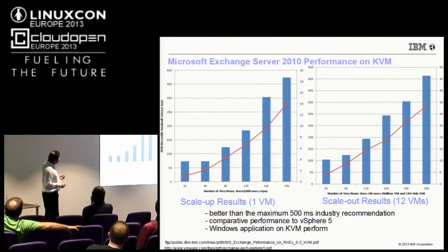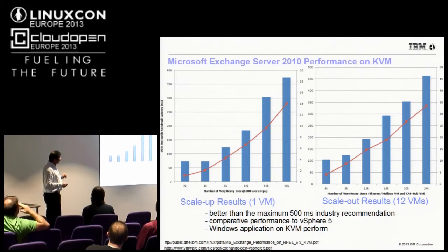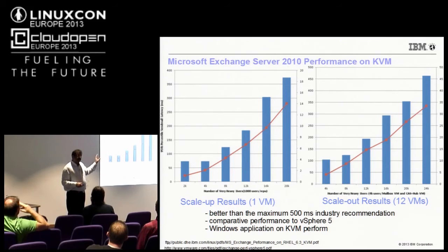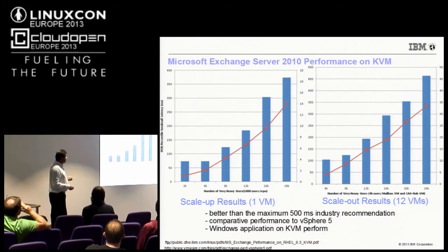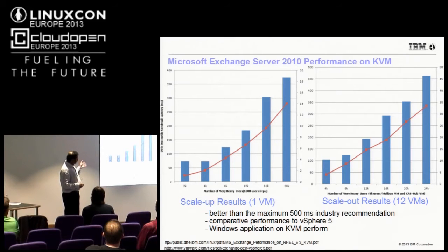There's a typical industry-wide acceptance that a send-mail transaction on Microsoft Exchange Server should complete within 500 milliseconds. All the blue bars were always well below the 500-millisecond limit. The red line shows the CPU utilization rate, which was extremely low — showing a lot of room for growth. A second graphic shows multiple virtual machines running multiple Exchange instances: for every 4,000 users, another pair of virtual machines was added, and 95% of all send-mail transactions remained below 500 milliseconds.